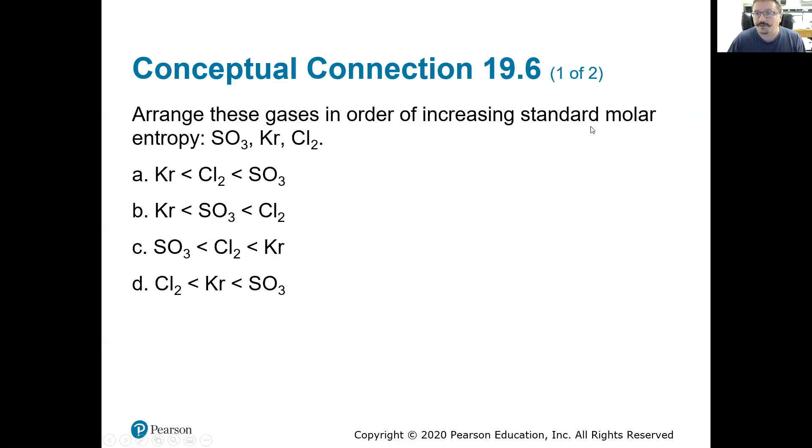So arrange these gases in order of increasing standard molar entropy, SO3, krypton, and chlorine gas Cl2. So we want to go from increasing, so we're going to go from lowest entropy to the highest. Well, the big thing I noticed right off the bat, I have a single atom, I have two atoms, I have four atoms. So I would say that we're going to see that just by overall increasing complexity of the compounds, we're going to see the increasing entropy, and that's what we see there. Going from the single atom being the least complex, lowest entropy, up to that four atom system, having the most available microstates, the most complexity, the most entropy.